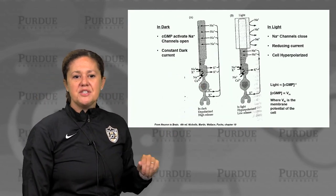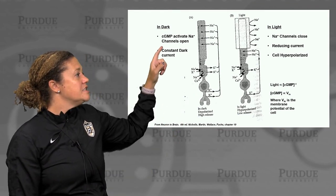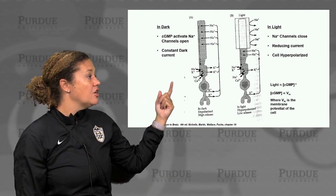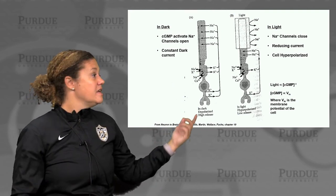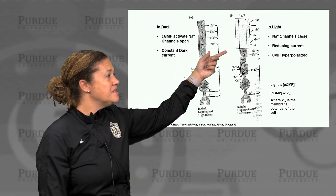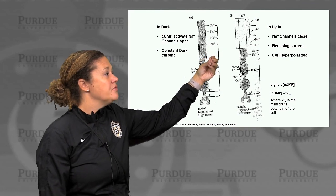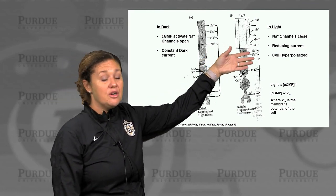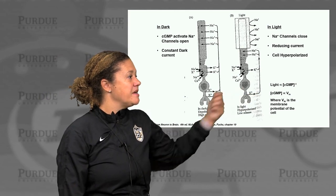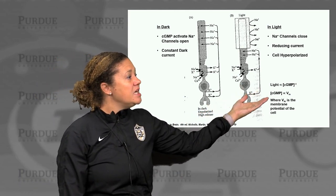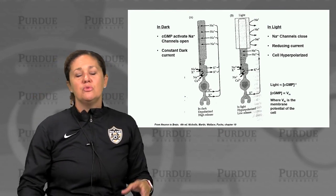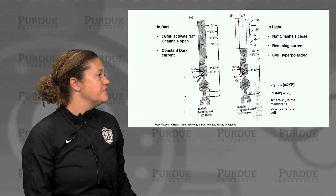To summarize in cellular form: in the dark, cyclic GMP normally activates those sodium channels, which are open, so we have a constant dark current. With that dark current, the cells are depolarized, and we get a high release of neurotransmitter. In the light, those sodium channels close — we have a reducing current across the cell membrane, and the cells hyperpolarize. So light is inversely proportional to the amount of cyclic GMP, which is proportional to the membrane potential of the cell, which regulates the neurotransmitter released from the photoreceptor.